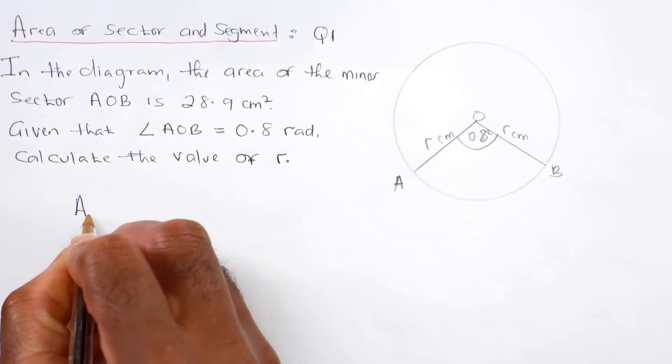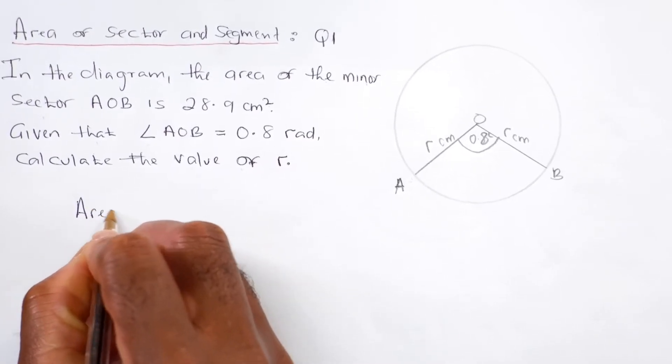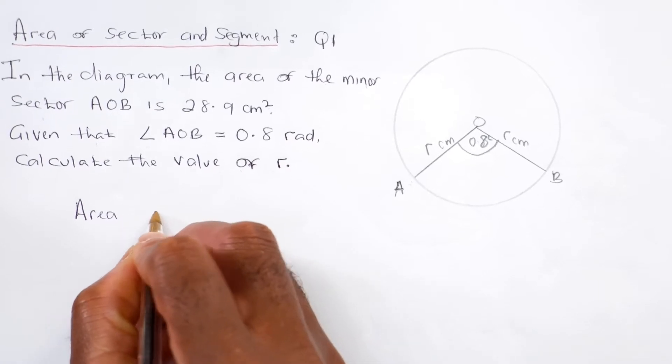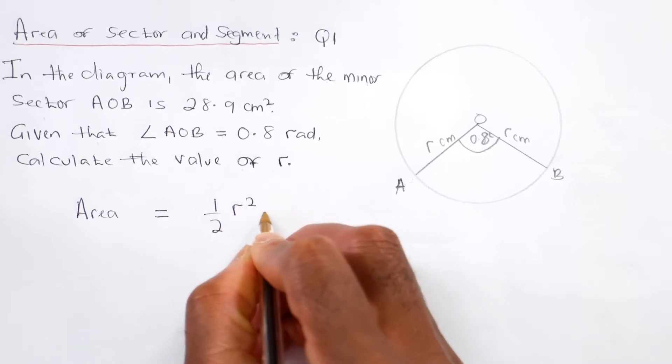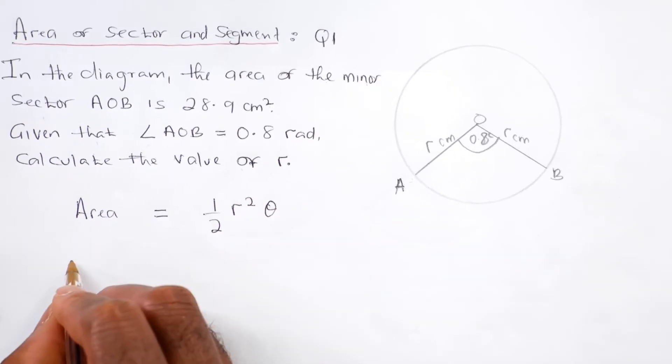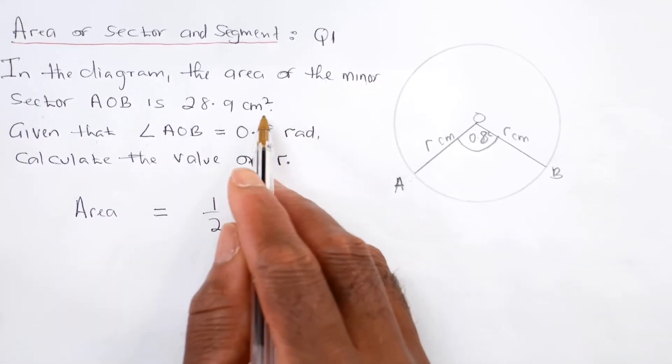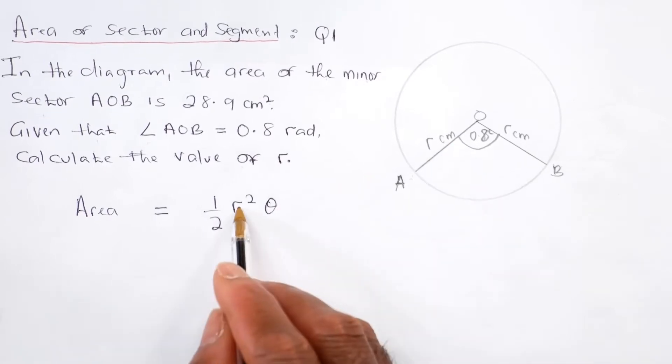Right, so we know that the area of a sector is equal to one half r squared theta, and we need to find the radius r, so we need to make r the subject.